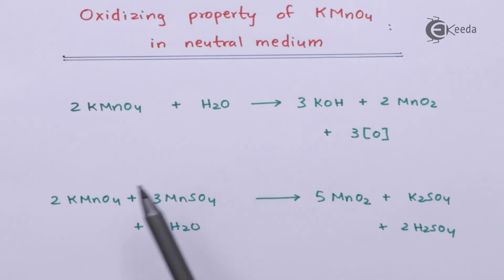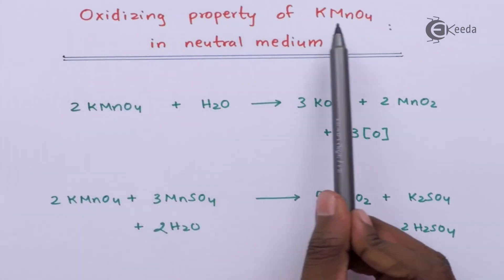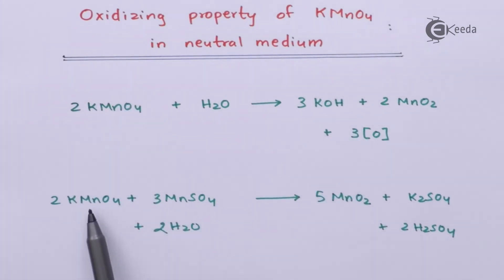This is the reaction when it proceeds. Whenever we are talking about the oxidizing property of KMnO4, basically KMnO4 reacts with H2O, it forms 3 nascent oxygen atoms, and that is how MnSO4 is basically oxidized to MnO2.